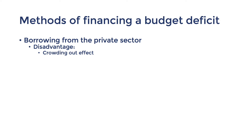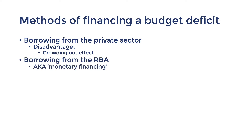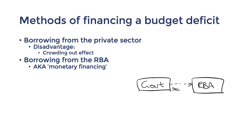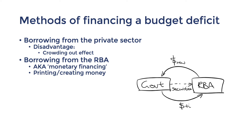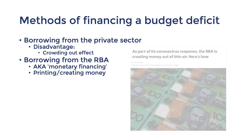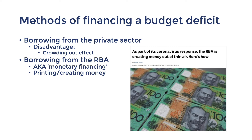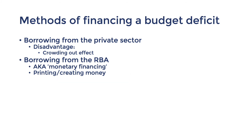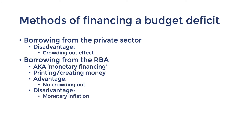Next, instead of borrowing from the private sector, another way of funding a budget deficit is by borrowing from the RBA — also called monetary financing. The federal government sells new securities to the RBA, which prints and creates money and gives it to the federal government to finance the deficit. This was the method used to finance some of the government's spending in 2020, such as the JobKeeper program in response to coronavirus. The advantage is that it avoids the crowding out effect, but the disadvantage is that it could lead to monetary inflation.